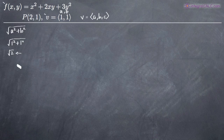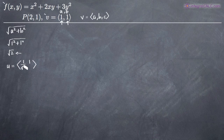So now we take this value, the square root of 2, and say that the unit vector is equal to: we take a and b, which we have as 1 and 1, and put those in the numerators. Then we take the square root of 2, the value we just found, and put that in the denominators. So instead of v = (1, 1), we now have u = (1/√2, 1/√2), and this is our unit vector — the first piece of information.